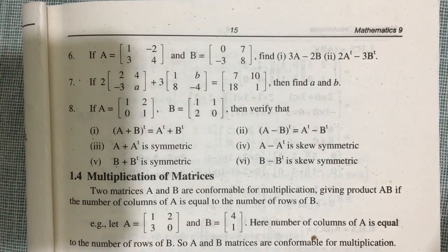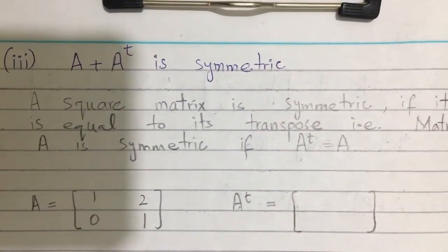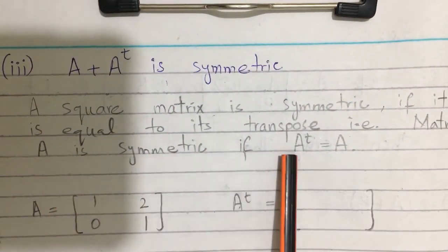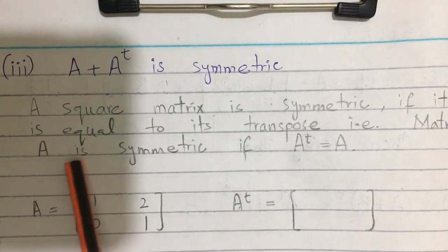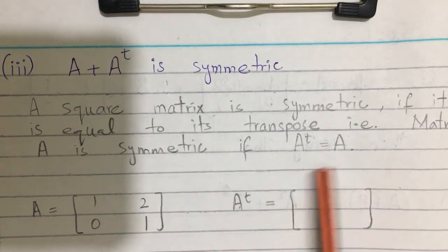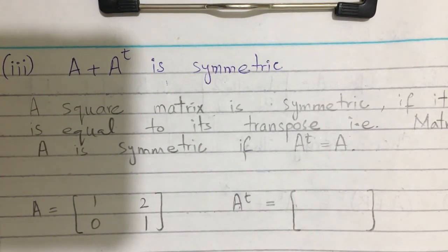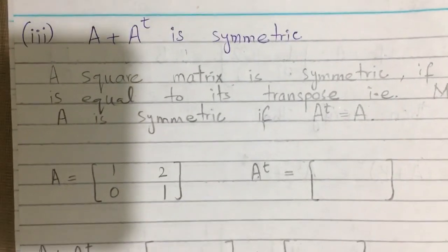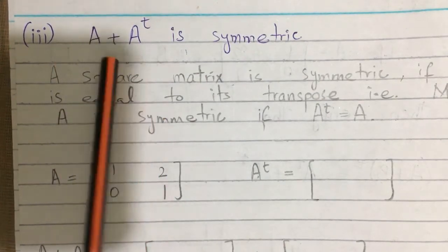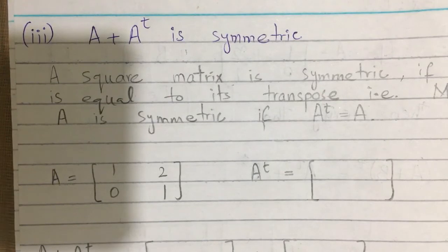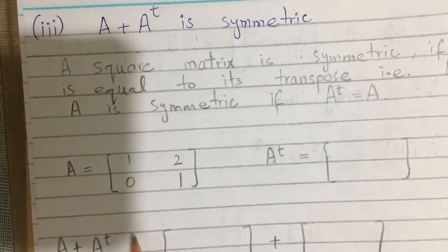The third part is: A plus A transpose is a symmetric matrix. A square matrix is symmetric if it is equal to its transpose. That is, a matrix is symmetric when it equals its own transpose. For example, A is symmetric if A^T equals A. So you have to prove that A + A^T is symmetric. First, solve A + A^T, then take its transpose again. If both are the same, then the matrix is symmetric.